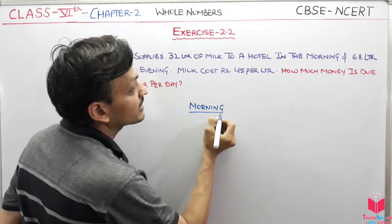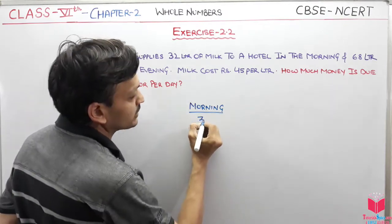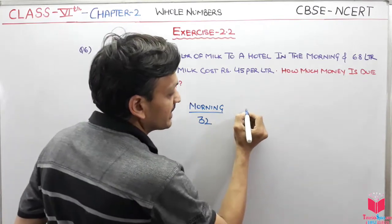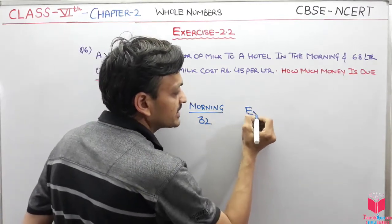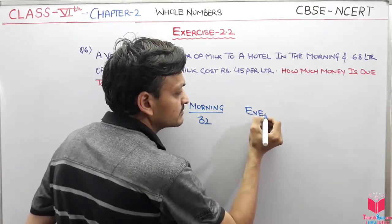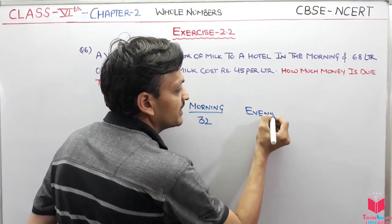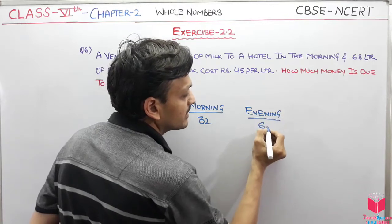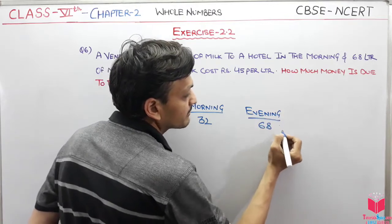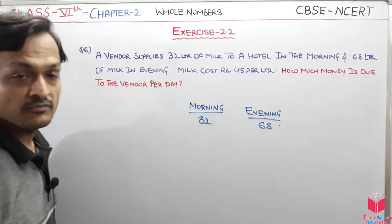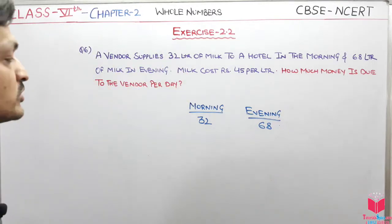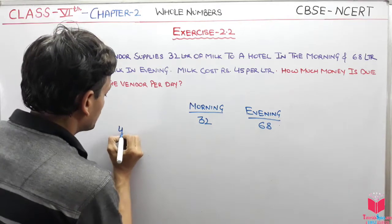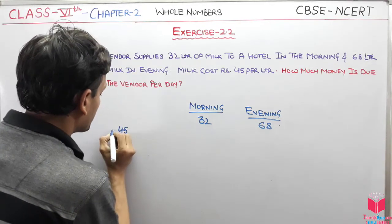In the morning we have 32 liters. Evening में दिया 68 liters. Then एक दूध की cost कितनी है — हमारे पास Rs. 45 per liter.